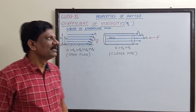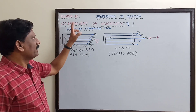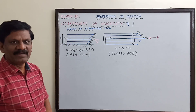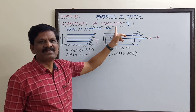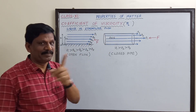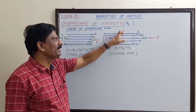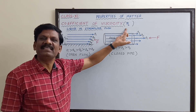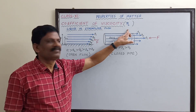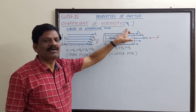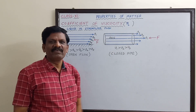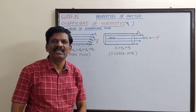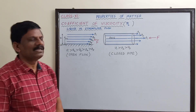Let us now derive an expression for the coefficient of viscosity, represented by the Greek symbol eta. Eta is called the coefficient of viscosity of any liquid.